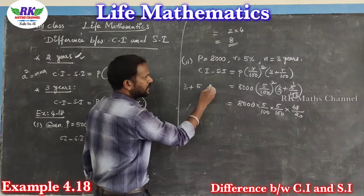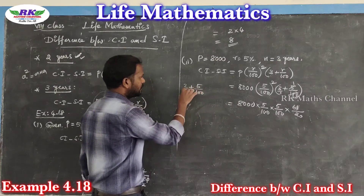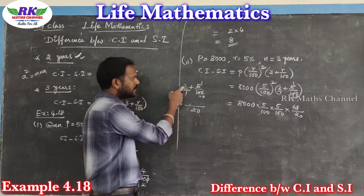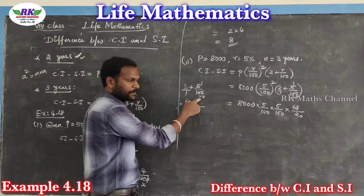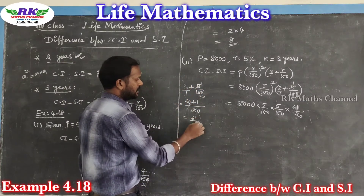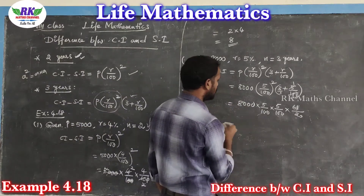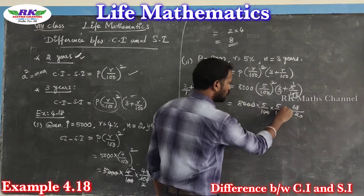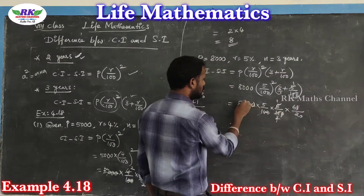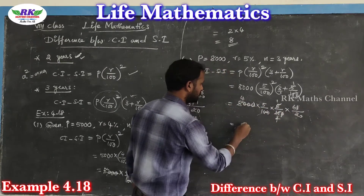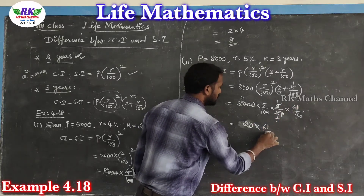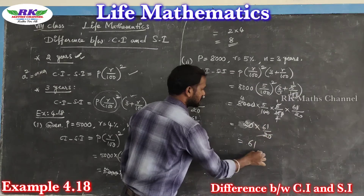So, 3 plus 5 by 100 — working it out: 5 ones are 5, 20s — 1 plus 20 is 20, then 20 into 61 by 20, canceling 20s — 20 into 20 canceling, result is 61. That's the difference: 61 rupees.